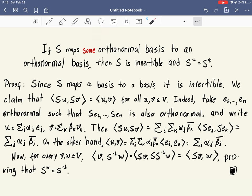We know that there exists an orthonormal basis such that when you apply S to that orthonormal basis, the collection of vectors you get is again orthonormal. We're going to prove that S is invertible and the inverse of S equals the adjoint of S.